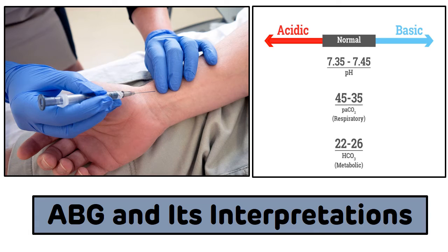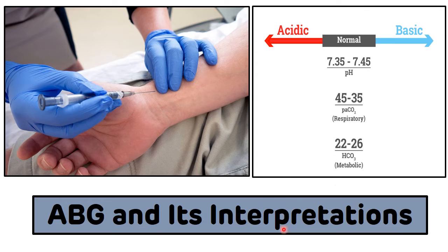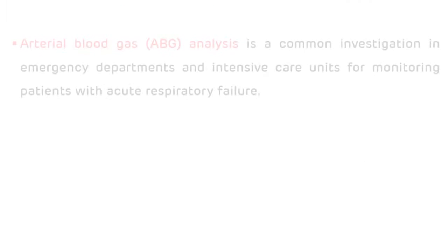Hello everyone. In the previous video we discussed acid-base disorders. These acid-base disorders are diagnosed with a special investigation called ABG, which is done from arterial blood. In today's video we will discuss ABG and how to interpret the ABG report for the diagnosis of acid-base disorders, along with various case studies based on ABG report interpretation.